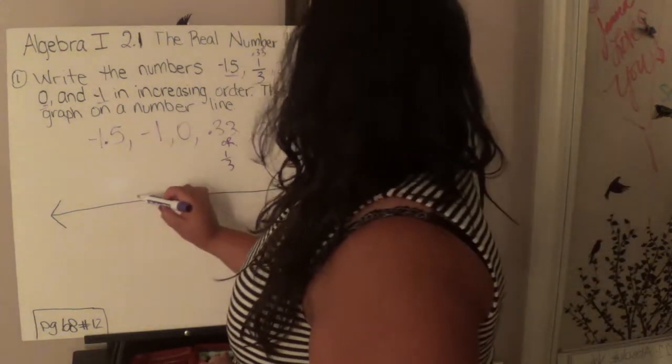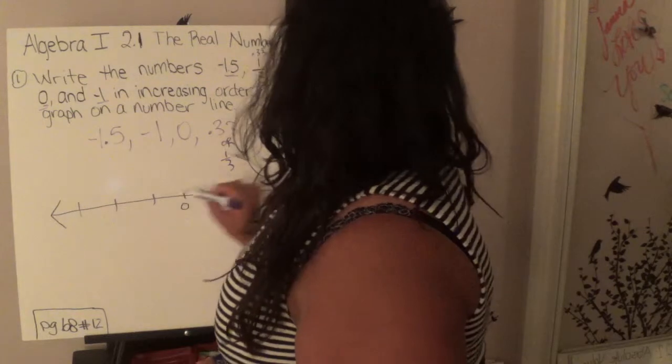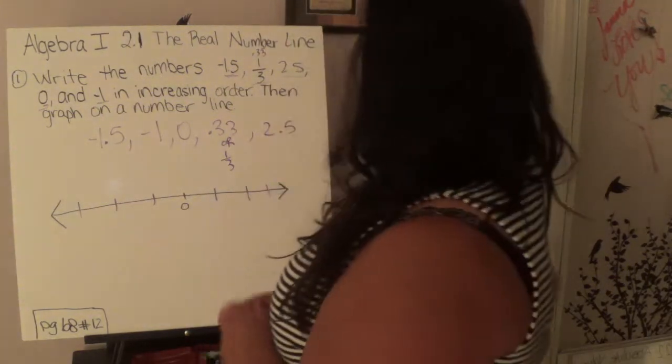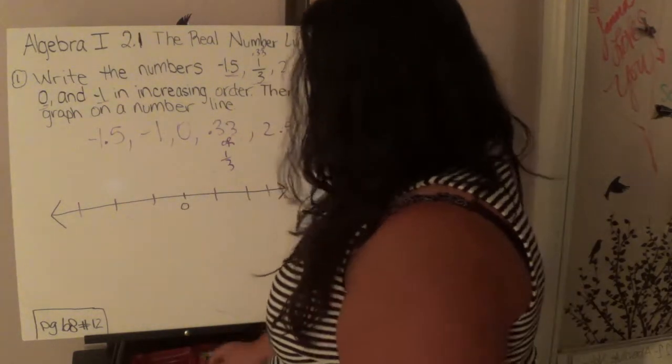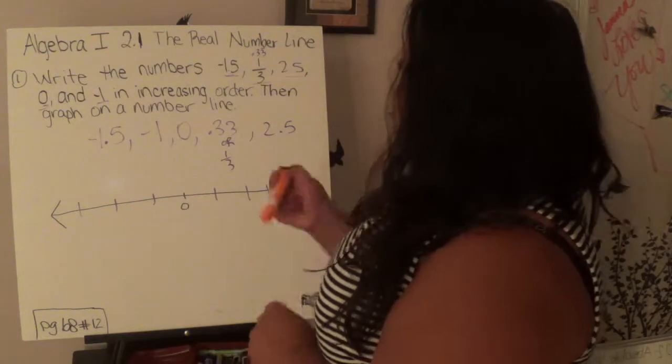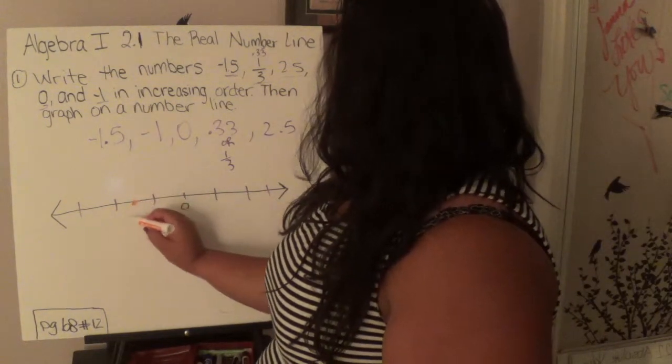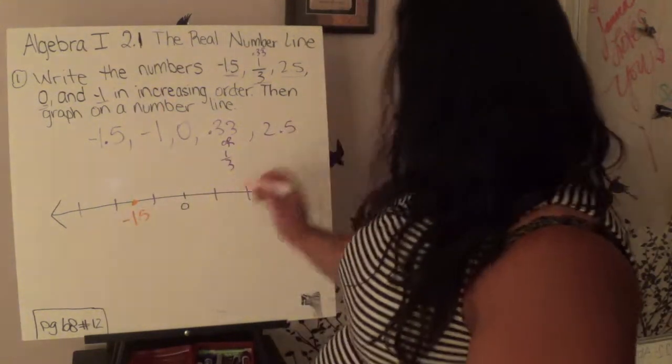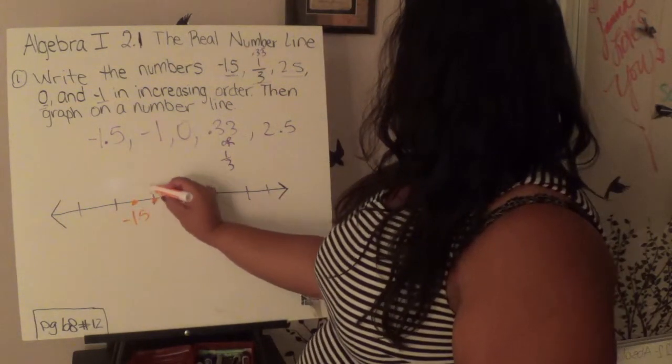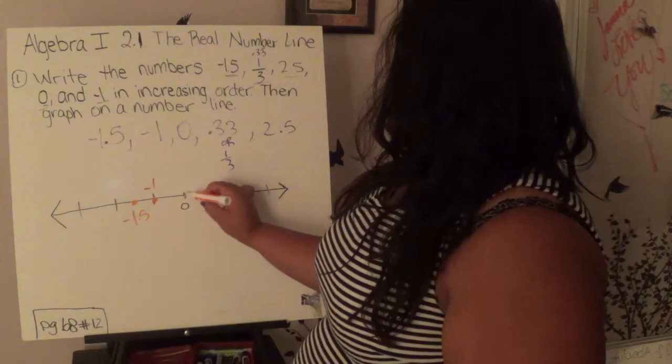So if I go ahead and put the number line, 1, 2, 3, and I want to graph it. Negative 1.5 is here, so this is negative 1, and this is half. So this would be negative 1.5. Next would be negative 1, which would be right here. Next would be 0.